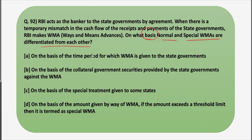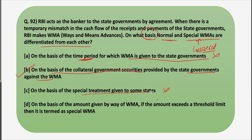Looking at the options: Option A says on the basis of the time period for which WMA is given — we haven't read about this, so it is not true. Option B says on the basis of collateral government securities provided by state governments against the WMA — yes, this is the answer, because in special WMAs collateral is provided while in normal WMAs there is no collateral. Option C says on the basis of special treatment given to some states — also not true. Option D says on the basis of amount — not true either. So the correct answer is option B.